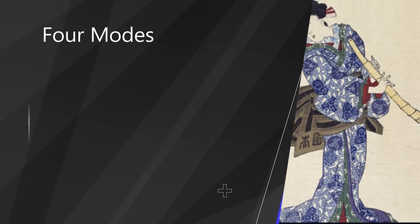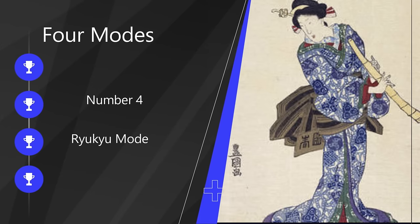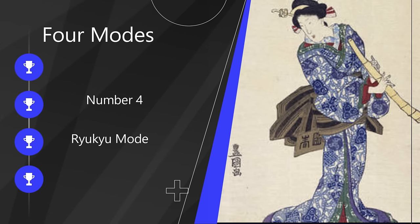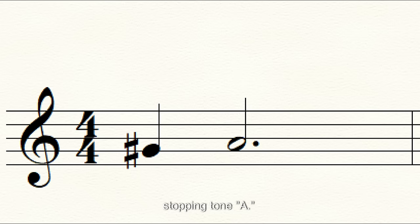The last of our four modes is the Ryukyu mode. This is a variation of the IN mode, where the minor second starts below the stopping tone A, giving us the note combination G-sharp, A.